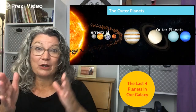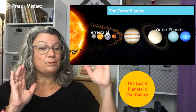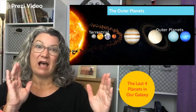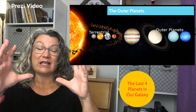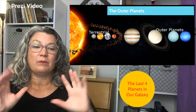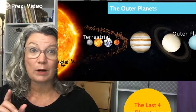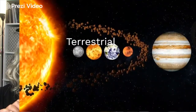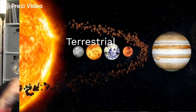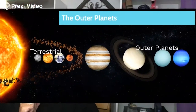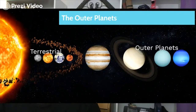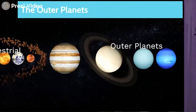So today we're going to move on. We're going to cut these planets in half and take half the planets and look at them as a group. Today we're going to look at the outer planets. We have two sets — the first four planets are known as terrestrial planets, and we're going to look at those in the next class. The last four planets are known as the outer planets, and we're going to take a deeper dive on those.